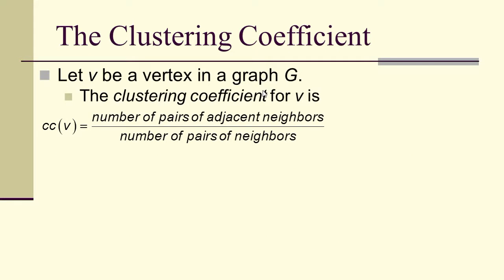We begin with the clustering coefficient. We're going to look at a graph G, and for now assume it is an undirected graph. If v is a vertex in graph G, the clustering coefficient cc(v) is the ratio of the number of pairs of adjacent neighbors to the number of pairs of neighbors.